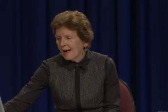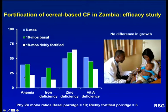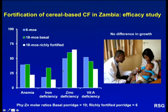Our study of a cereal-based complementary food in Zambia was undertaken on infants recruited from Lusaka at six months of age. The infants received either a richly fortified porridge or a basal fortified porridge for 12 months. Results showed a significant reduction in the prevalence of anaemia, iron deficiency and to a lesser extent vitamin A deficiency in those receiving the richly fortified porridge compared to the basal fortified porridge. Note that there was no significant difference in the prevalence of zinc deficiency between the two groups at the end of the study, and no significant difference in growth.